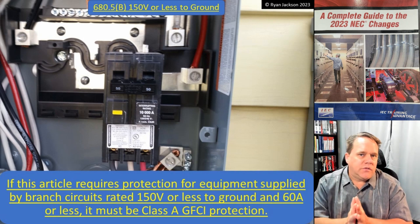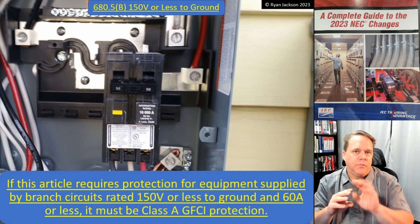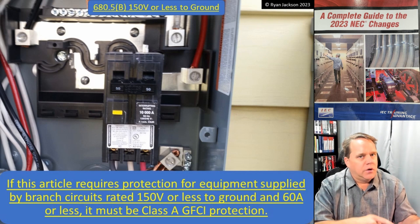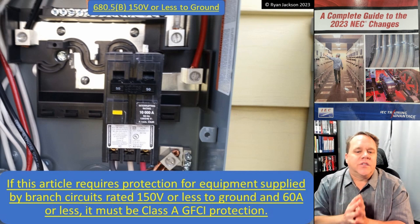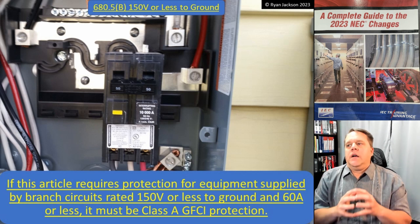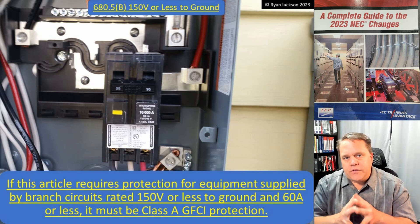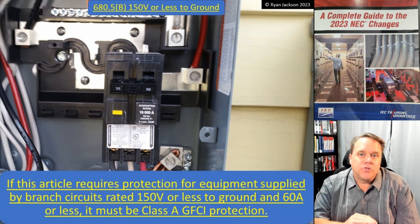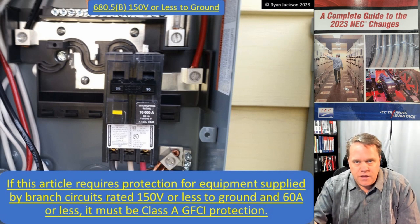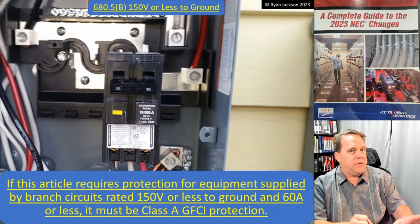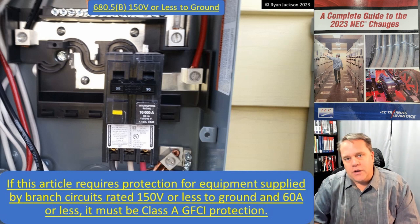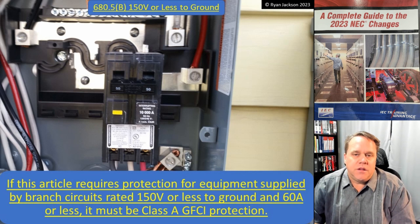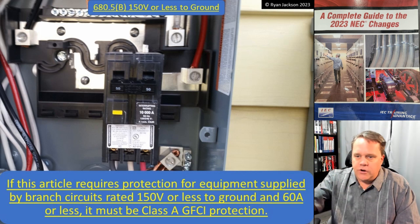A Class A GFCI opens when the difference in current between all the circuit conductors is between four and six milliamps — does not open if it's less than four, must open if it's greater than six. There was a Class B GFCI device all the way back in 1968; they haven't been manufactured in over 50 years. So forget Class B — you're not going to find one. If you see an actual Class B GFCI, take a picture and email it to me, because I don't know anybody that has seen one in the last 50 years.